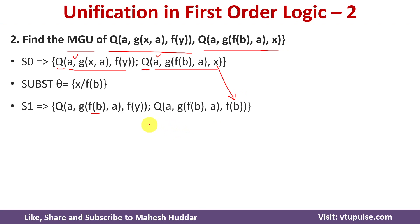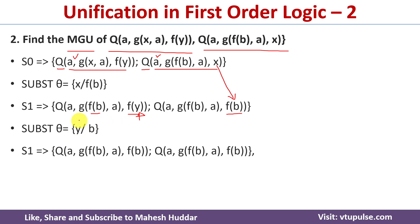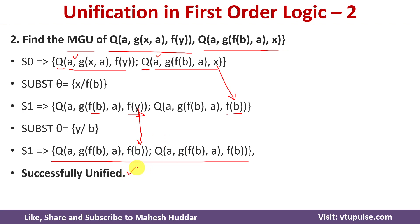Now we need to replace variable y. The third argument is f(y) in the first expression and f(b) in the second. Since the outer function f is the same, we can replace y by b. After this substitution, f(y) becomes f(b), making both expressions exactly the same. Unification is successful and the unifier is: x → f(b), y → b.